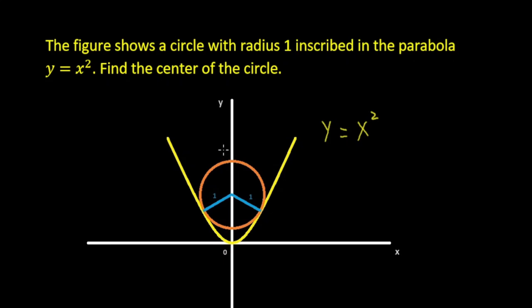Let's solve this question: a circle with radius one is inscribed in the parabola y equals x squared. We're looking for the coordinate of the center of the circle. From the graph, we know the x-value of the center is zero because of symmetry, so we need to find the y-value. Considering the intersection points of the circle and the parabola may help — these two points are where the two curves meet.